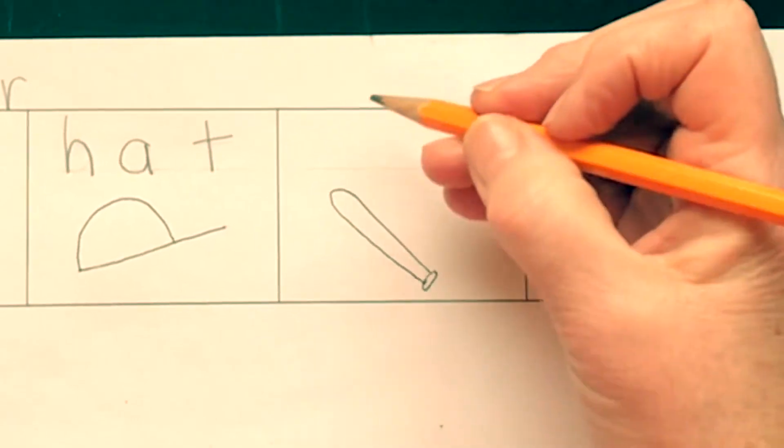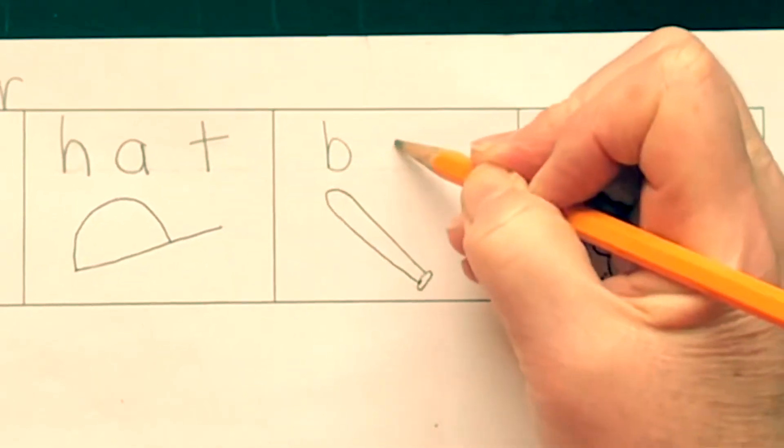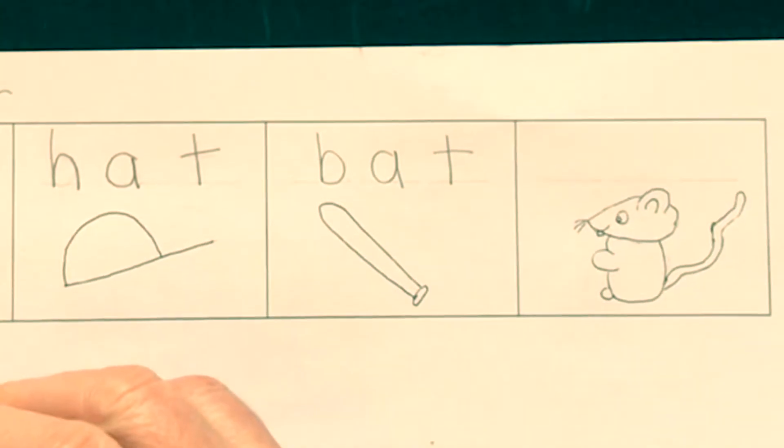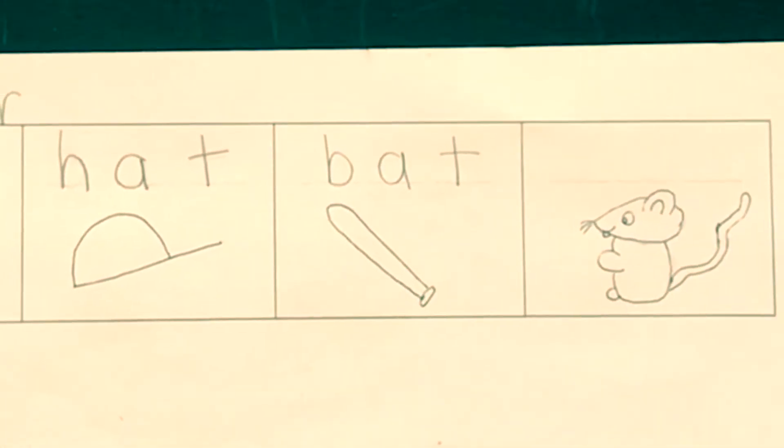Now say bat. B-B. Make your B-A-T. Bat. Cat. Hat. Bat. They all rhyme, and so does rat.